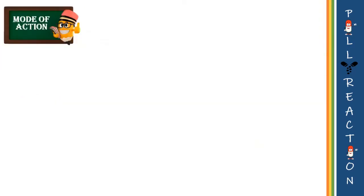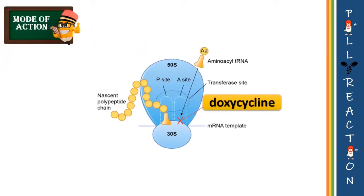The mechanism of action of doxycycline is by binding to the 30S subunit of the ribosome, thus preventing amino acid tRNA attachment, resulting in hampered protein synthesis.